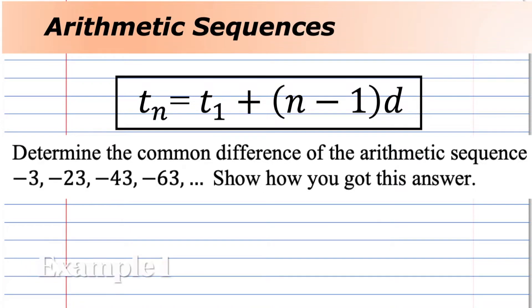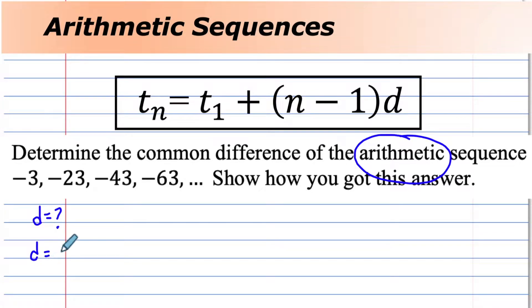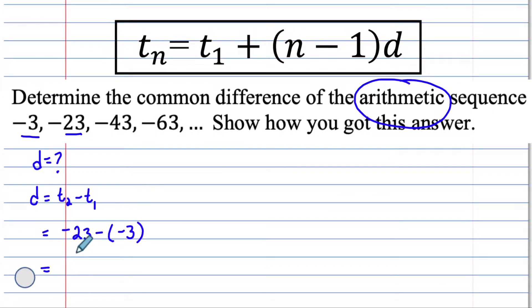Determine the common difference of the arithmetic sequence. Show how you got this answer. d is the second term minus the first term. Here's our second term minus the first term. Negative 23 subtract a negative 3. Now we have to remember our integers.